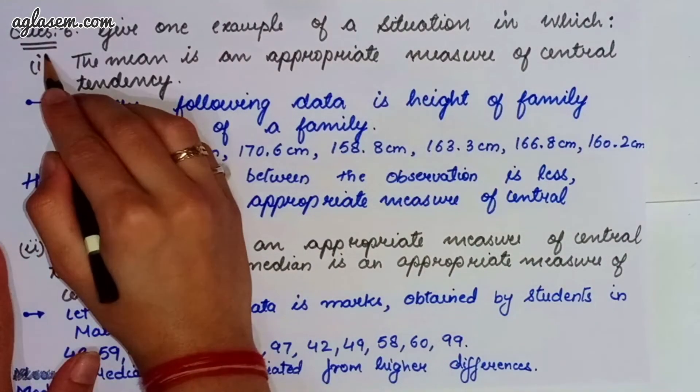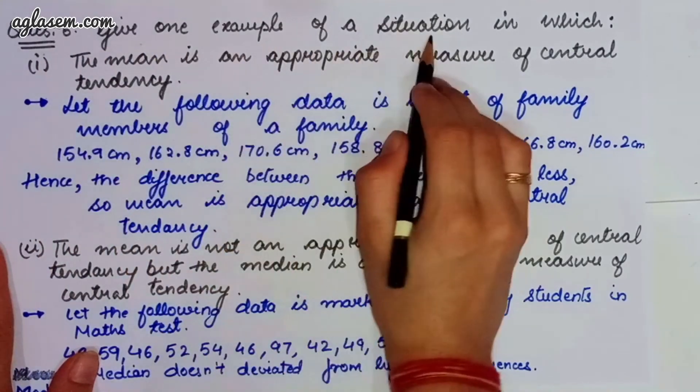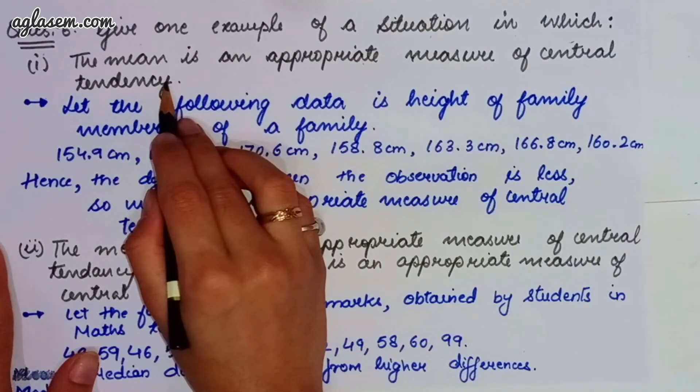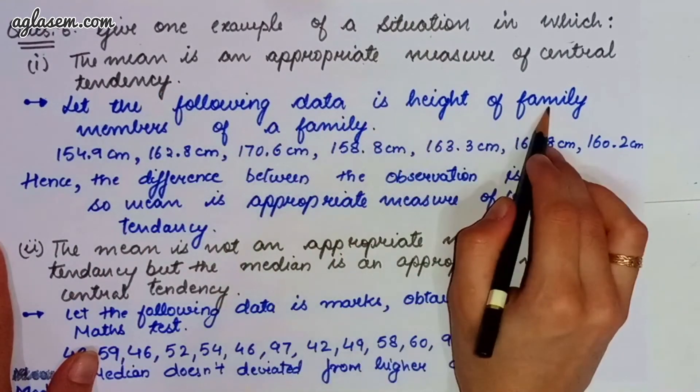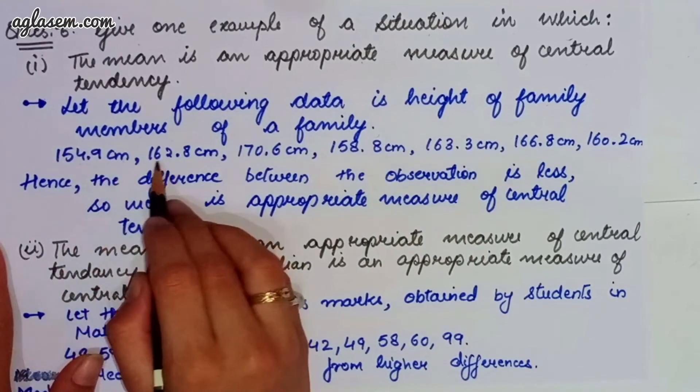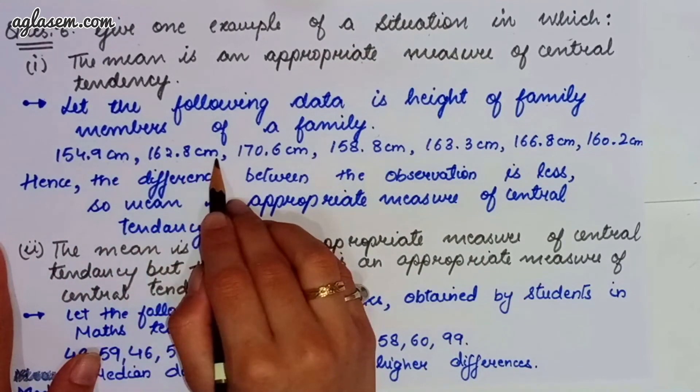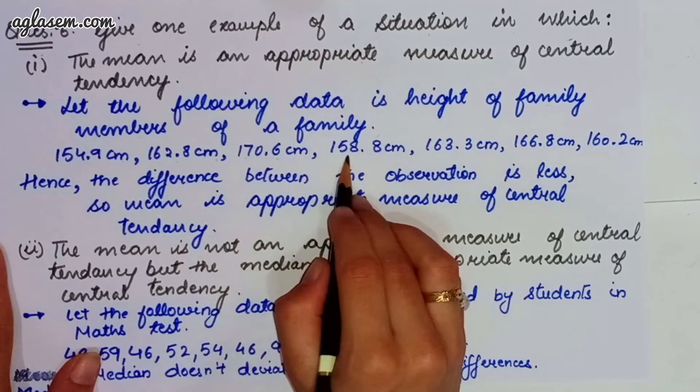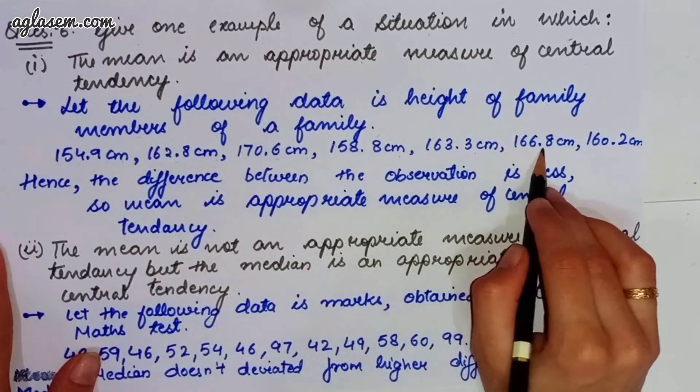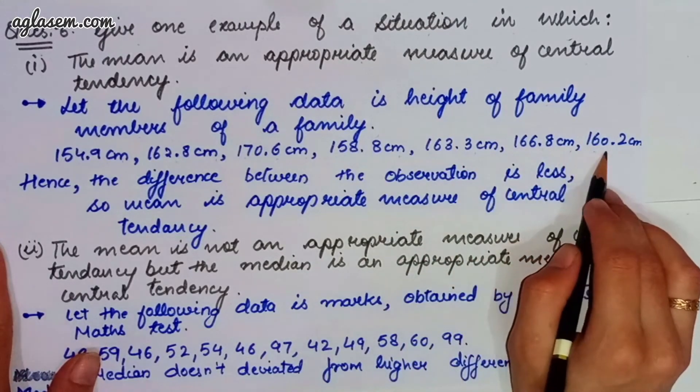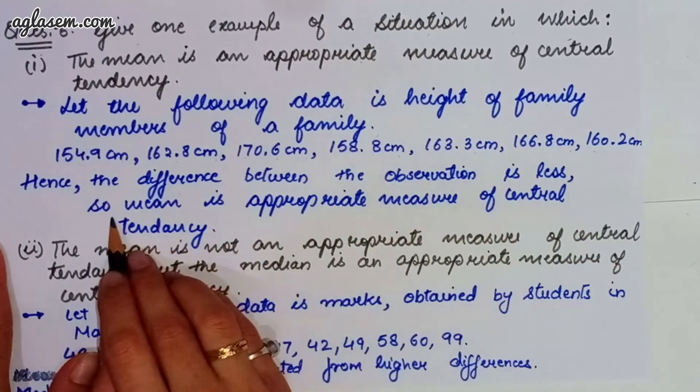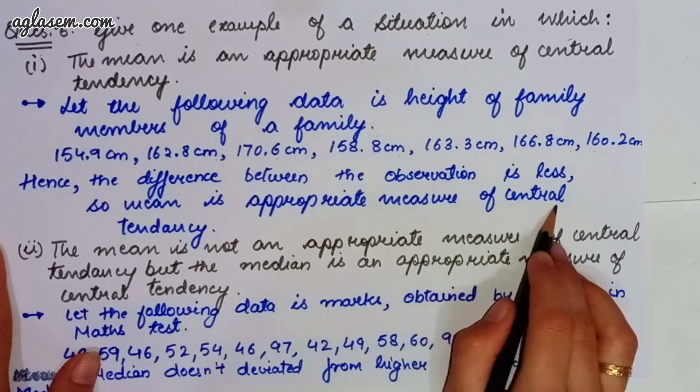Moving to our sixth and the last question, which says, give one example of a situation in which the mean is an appropriate measure of central tendency. So, the answer is, let the following data of the height of the family members of the family is 154.9 cm, 162.8 cm, 170.6 cm, 158.8 cm, 163.3 cm, 166.8 cm, 160.2 cm. So, we can find the difference between the observations is less, so the mean is an appropriate measure of central tendency.